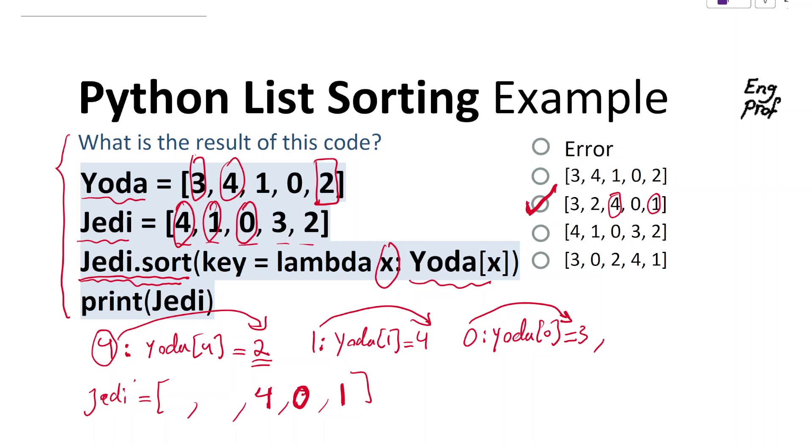And for one more example, 3 from Jedi should go to Yoda[3], which as you can see, Yoda[3] is 0. So 3 should go to position 0.